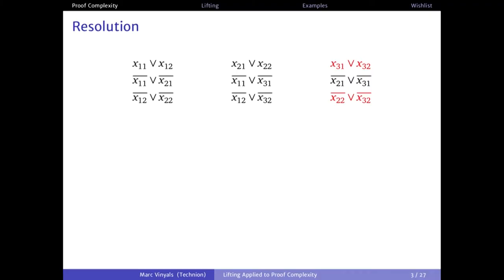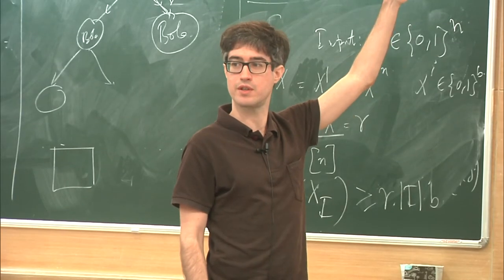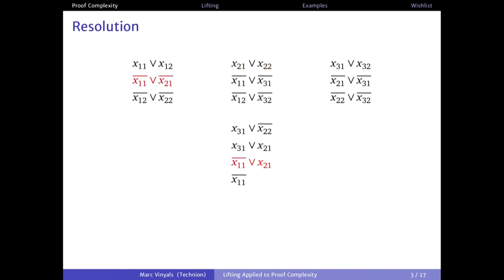Let's try to use some logic to find the proof of this formula. We're going to use the resolution proof system. Look at these two clauses in red — they share one variable, X32: it's positive in one and negative in the other. If there is a satisfying assignment, X32 must be either true or false. If it's false, the left part of the X31 clause must be true. If it's true, then X22-bar must be true. So we can derive that X32 or X22-bar must be true — something new from these clauses.